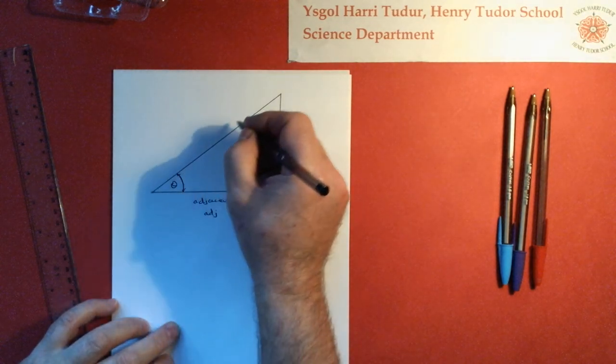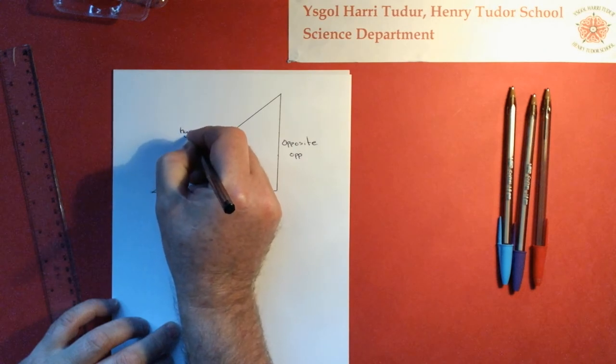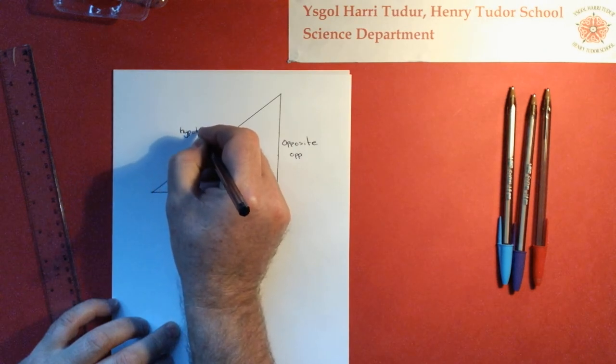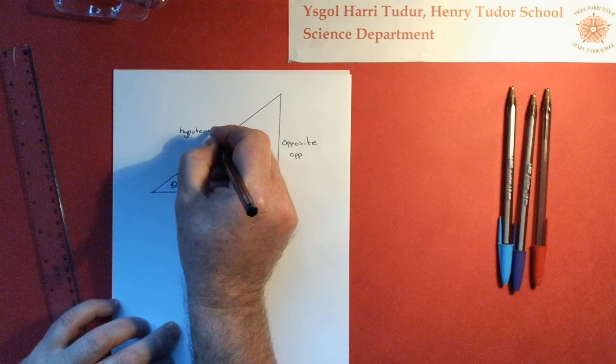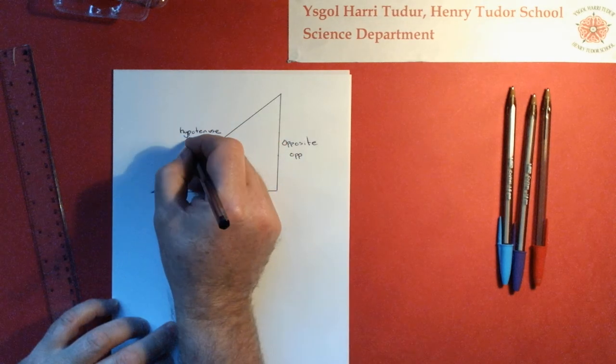And the last one is the hypotenuse, and we shorten that one to HYP.